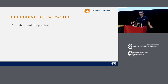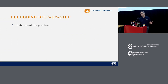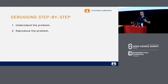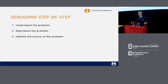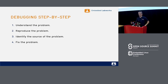Before I start talking about the tools, I just want to talk a little bit about the process of debugging. When you have to debug something, you have to understand the problem. We have to reproduce the problem — if you don't reproduce it, you don't know how and when you solved it. We have to identify the source of the problem. And then you have to fix it. So these are the main four steps to debug anything in software. Our talk here is focused on the third step: to identify the source of the problem.